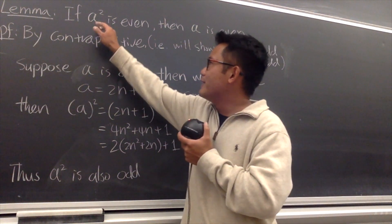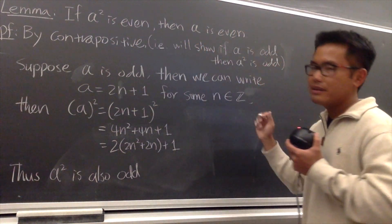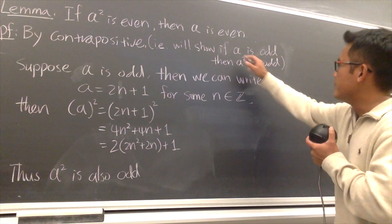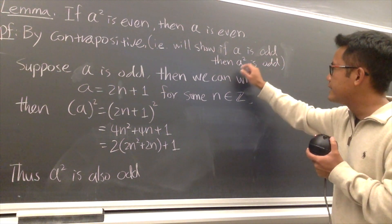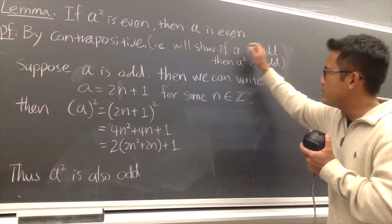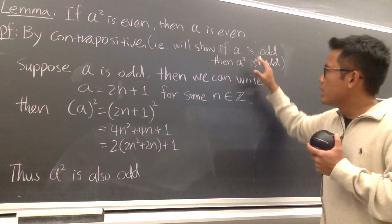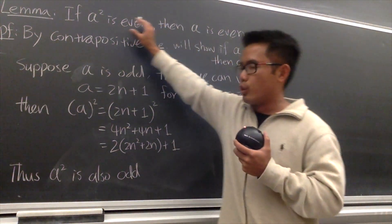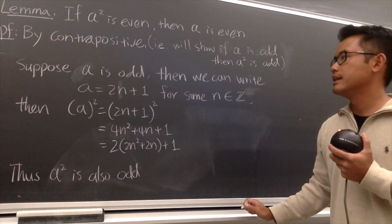Once again, if a squared is even, then a is also even. It's the same as saying, if a is odd, then a squared has to be also odd. It's easier to show this right here. If you can show this, then you can show the original statement.